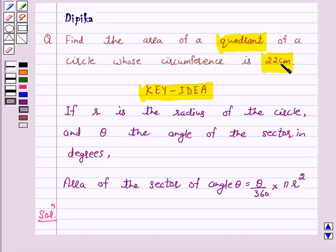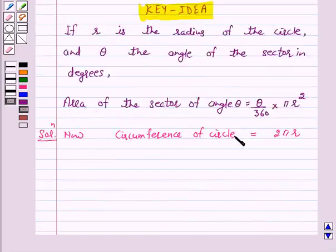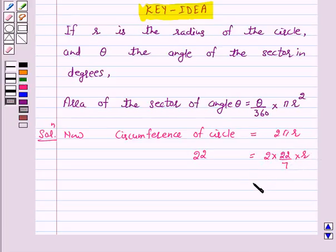We know that circumference of this circle is equal to 2 pi R where R is the radius of this circle. Now circumference of this circle is given to us 22 cm, so 22 is equal to 2 into 22 by 7 into R, or R is equal to 22 into 1 by 2 into 7 upon 22. On cancellation we have R is equal to 7 by 2 cm. Hence, the radius of this circle is 7 by 2 cm.